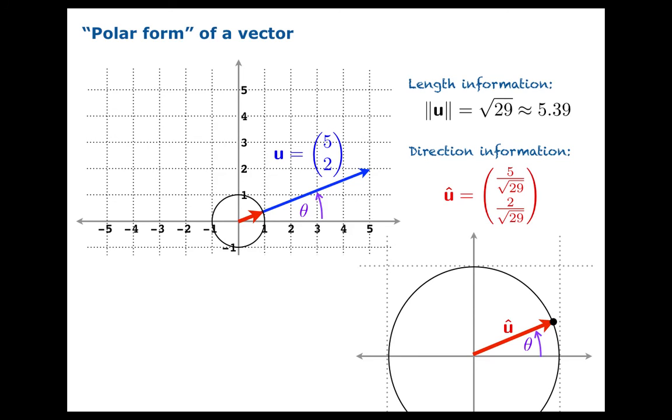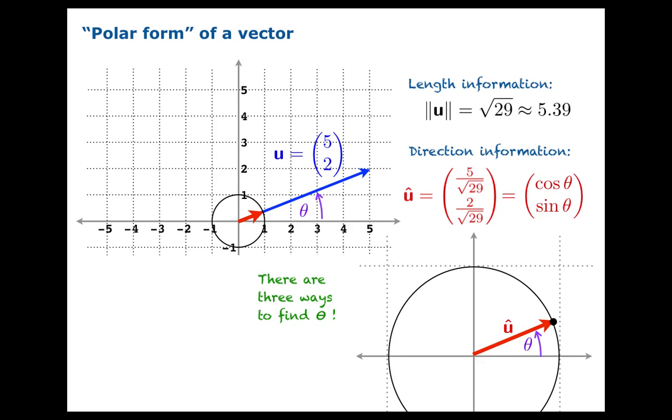Well, we are on the unit circle. So every point on the unit circle has coordinates cosine theta, sine theta. And we need theta. We'll notice there are three ways to get theta in this picture. Cosine theta is 5 over root 29. So theta could be the arc cosine of 5 over root 29.